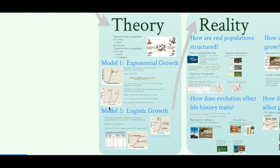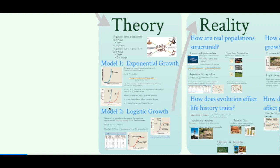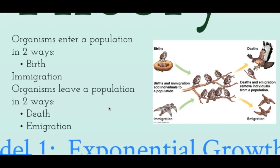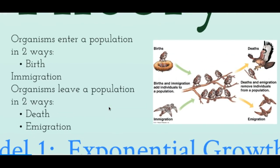There are two models we can look at. The first is about exponential growth and the second is logistic growth. There are two ways that organisms can grow a population: birth rate and immigration. And there are two ways that organisms can reduce a population: deaths and emigration. We're going to look at birth and deaths first as the two major ways that allow a population to grow or reduce its size.